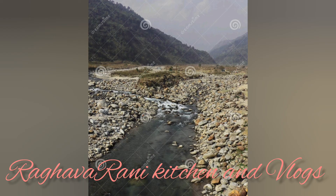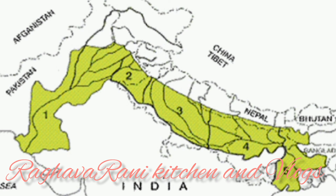These coastal plains are called by different names locally: the Utkal coast in Odisha, the Srikar coast in Andhra Pradesh, and the Coromandel coast in Tamil Nadu. Like the Indo-Gangetic Plains, these deltas are also agriculturally developed. The coastal zone enables rich fishing resources.